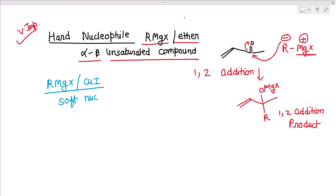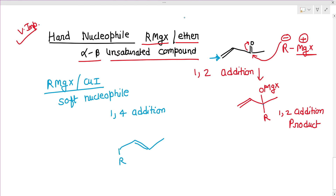However, if RMgX is treated with CuI, then CuI is a soft reagent that converts RMgX into a soft nucleophile. When it behaves as a soft nucleophile with an α,β-unsaturated compound, 1,4-addition (conjugate addition) occurs — the R group adds at the β-carbon (position 4), and OMgX ends up at the oxygen position.